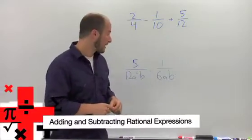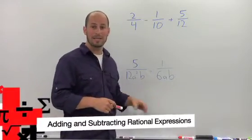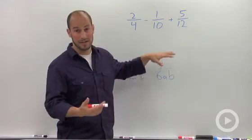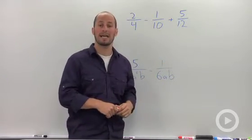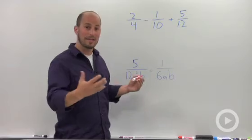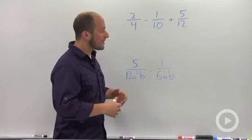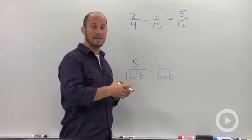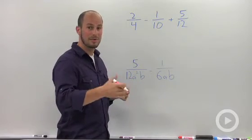Adding and subtracting rational expressions, expressions with variables, is pretty much the exact same process as adding and subtracting fractions. What we need is a least common denominator in order to combine everything. The way that I find least common denominators is to factor out everything in the denominator to its most simplistic form.